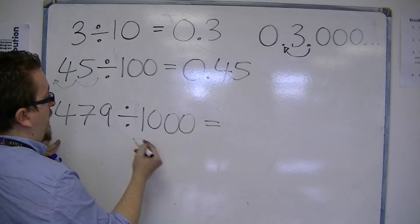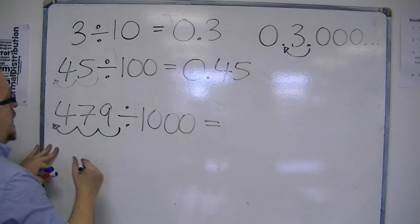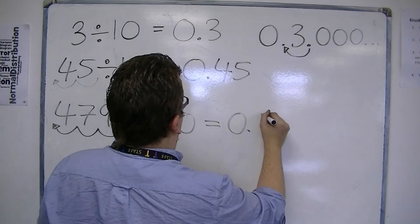479 divided by 1,000, the decimal point will move three places to the left. So, you get 0.479.